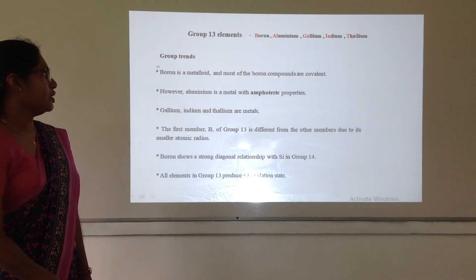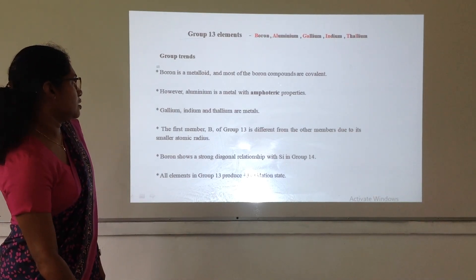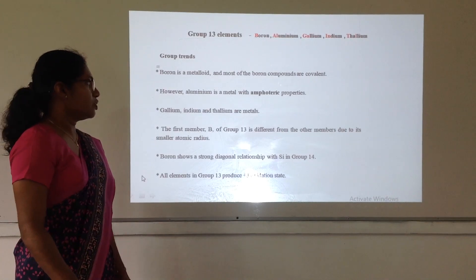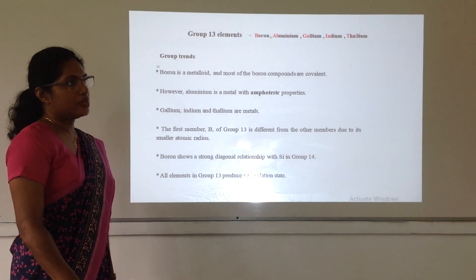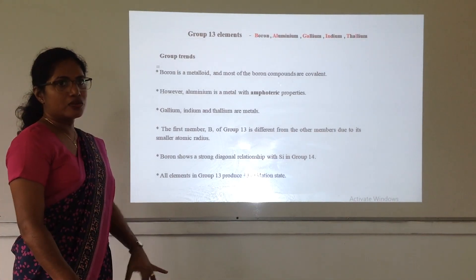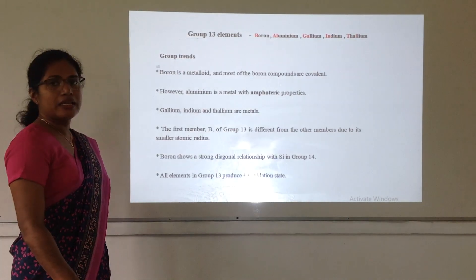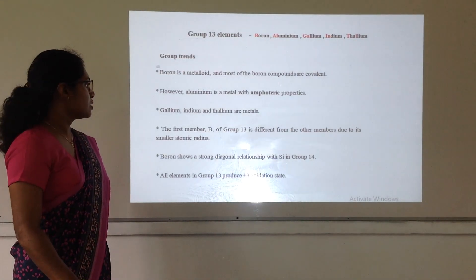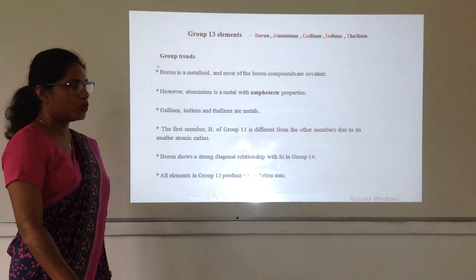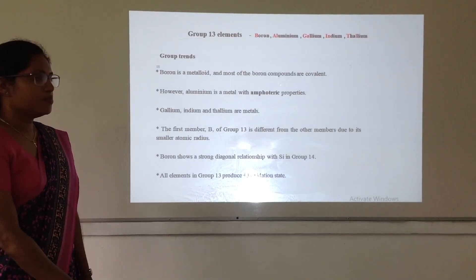boron is a metalloid and other elements are metals. Aluminium shows amphoteric properties. That means aluminium can act as an acid and also as a base. And gallium, indium and thallium are metals. The first member of this group is boron.